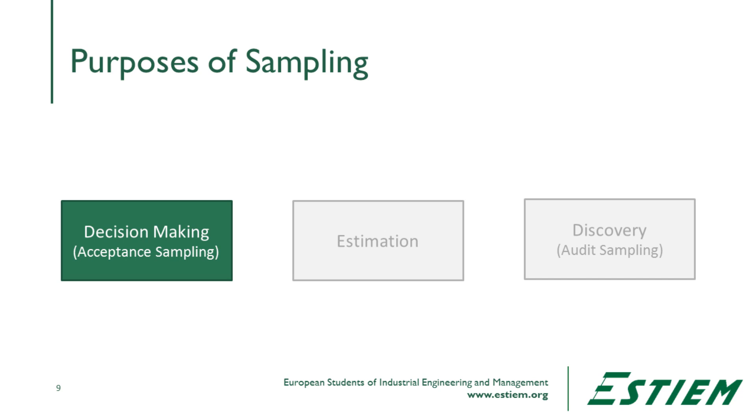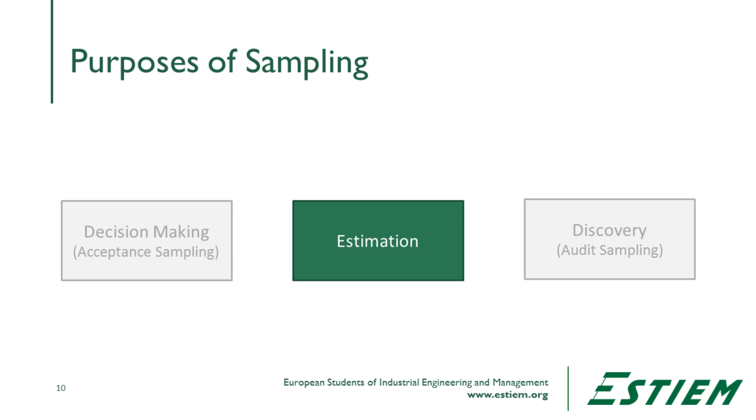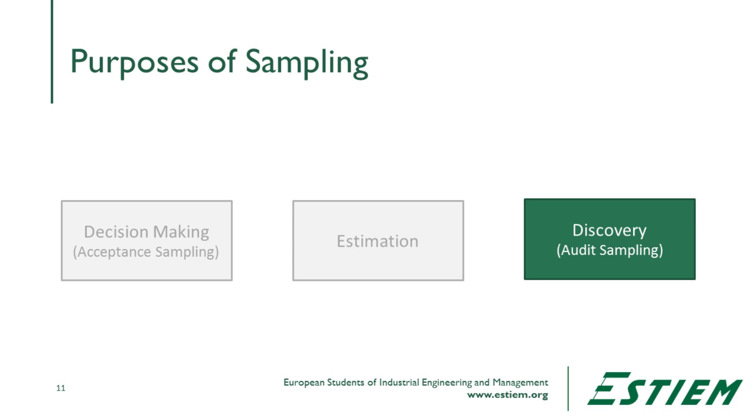We're going to use samples in different ways, and we need to understand some definitions. Are we trying to make a decision — do I ship or don't ship? That's acceptance sampling. Are we trying to make an estimation of how big the problem will be? Or is it discovery, where we're doing an audit to understand the magnitude of a problem? Each of these involves choosing a subset — some sample size — from a population to make an inference about the larger population.